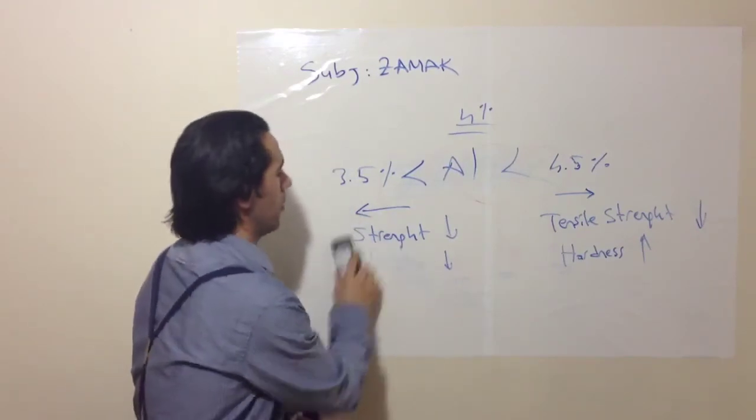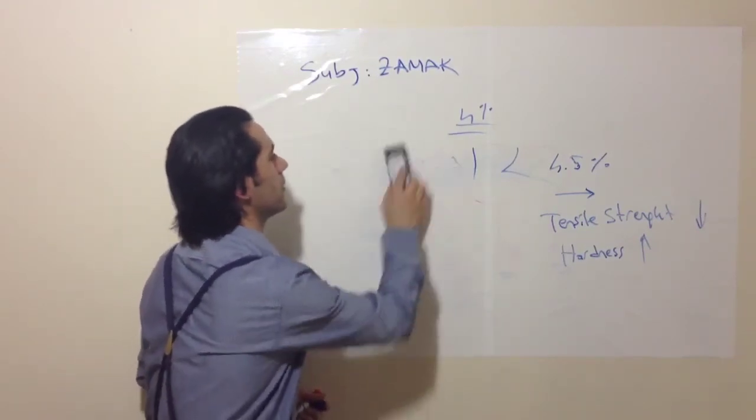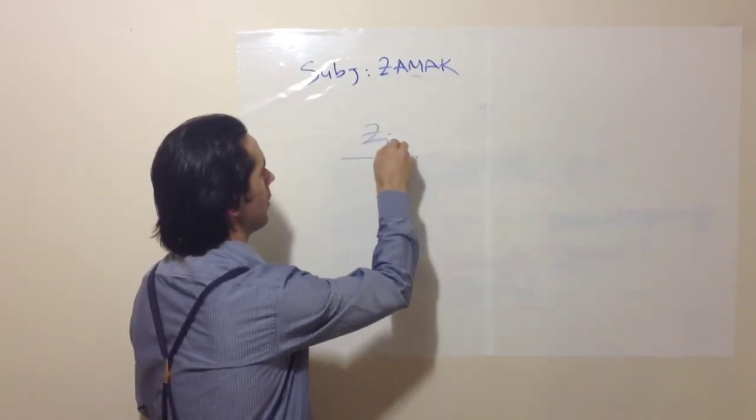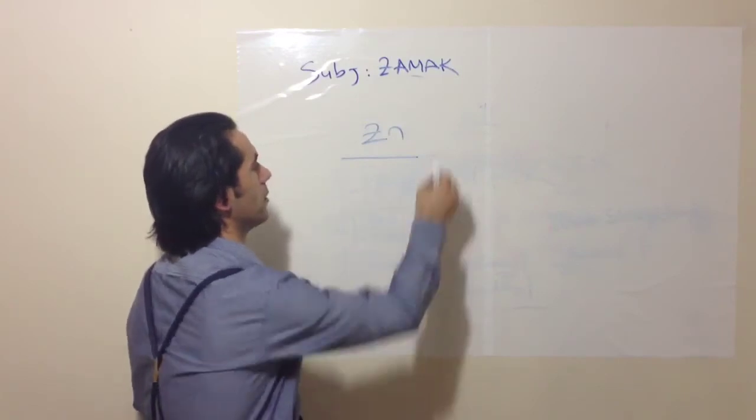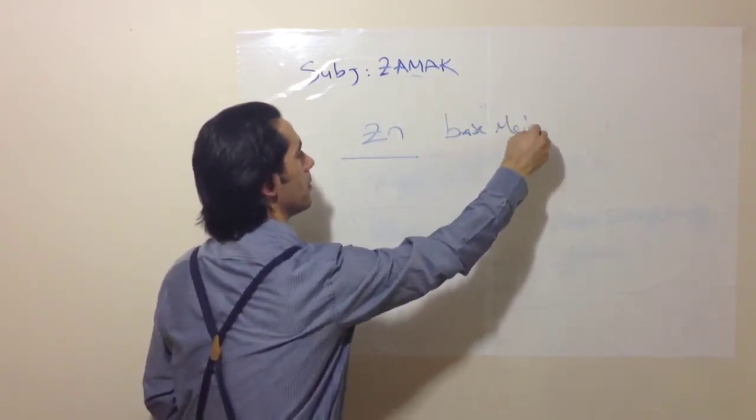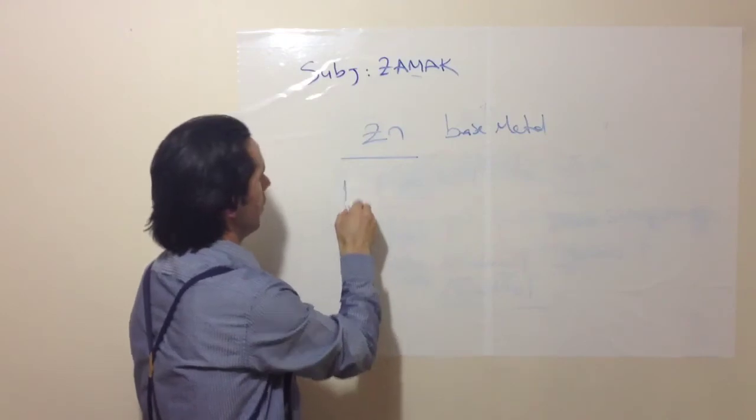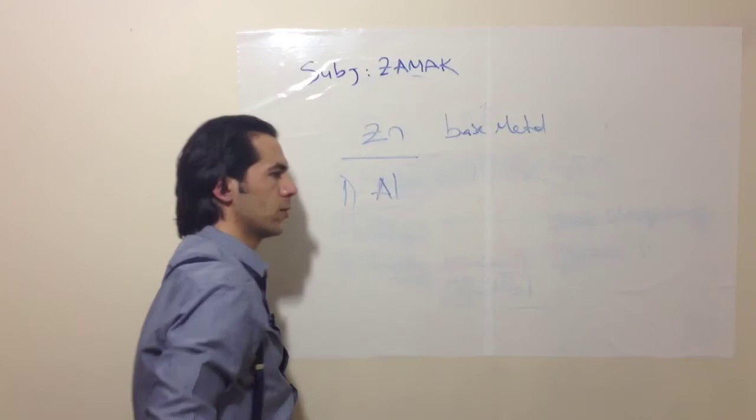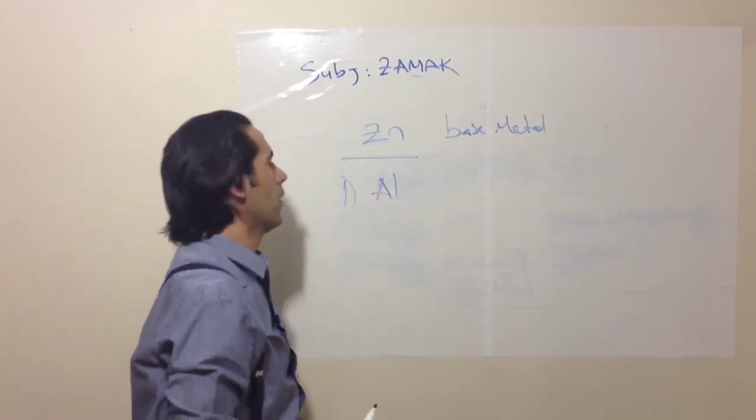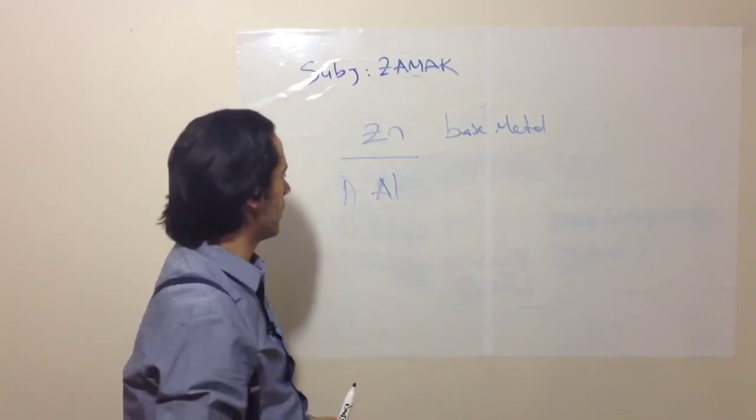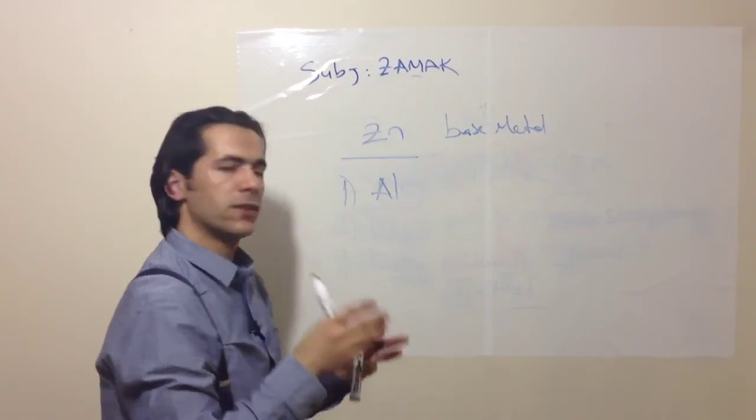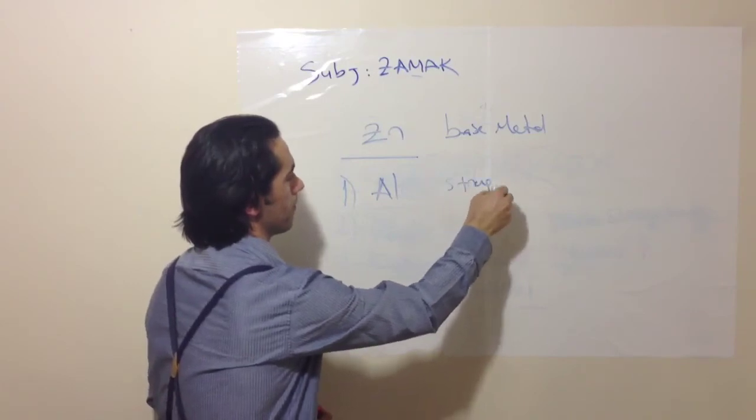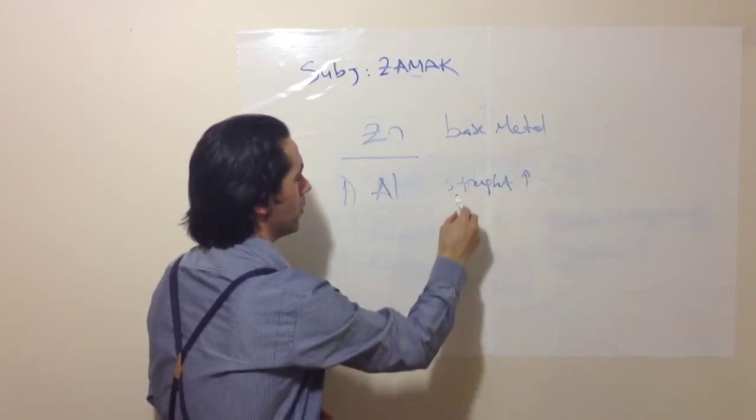Now let's talk about other elements. As I said before, Zinc is our base metal. We use Aluminium, or we need Aluminium, to increase strength. So it helps zinc to hold its shapes - increase strength, light, and fluidity.